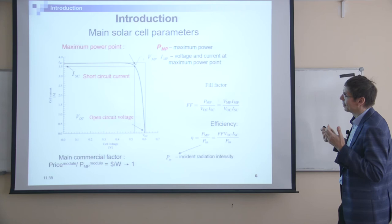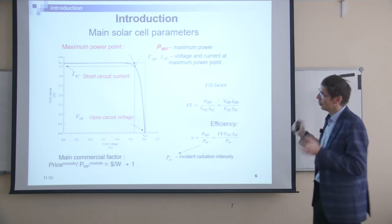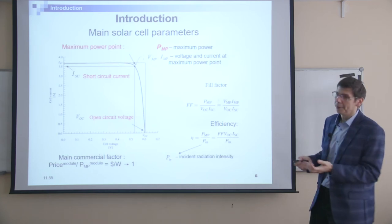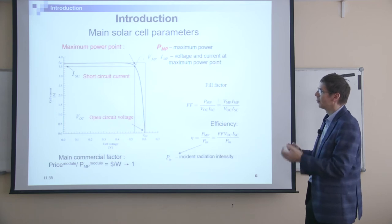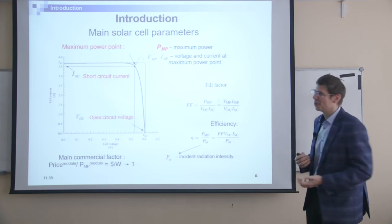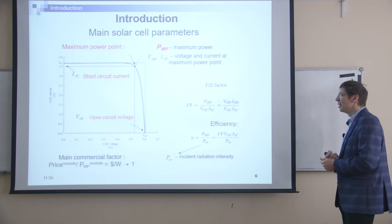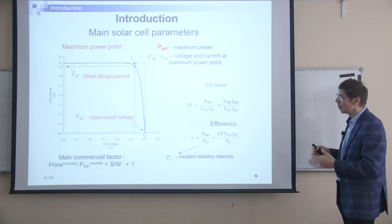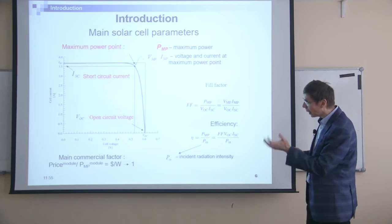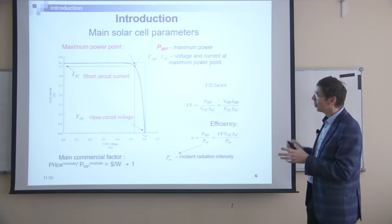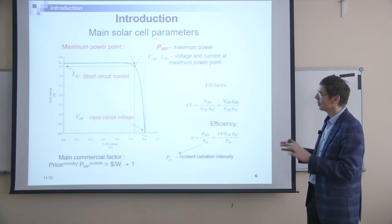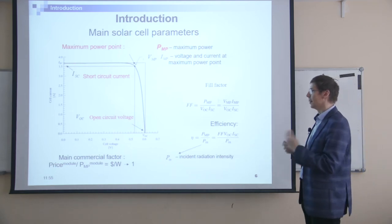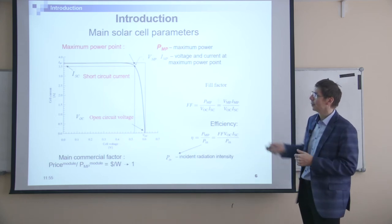The fill factor is very useful because normally you can just operate with the values of VOC, short circuit current, fill factor, and efficiency. It's enough to characterize with these values, and it's a little bit more useful because you don't need each time to see the full IVQ curve. Sometimes it's useful to look at the IVQ if there are specific features like an S-shape or some knee. But if you want to characterize the difference between different solar cells or see dynamics with annealing, it's useful to track VOC, short circuit current, and fill factor.